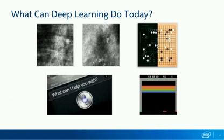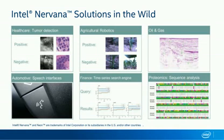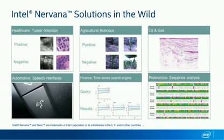Deep learning success stories span several problem domains today, including image recognition, speech recognition, natural language processing, and reinforcement learning. Here's a sample of examples where the Intel Nirvana platform has been applied to real-world problems: detecting tumors, counting plants in agricultural robotics, finding oil-rich regions in seismic data, building better speech interfaces in cars, searching through financial time series, and analyzing sequences of amino acids.